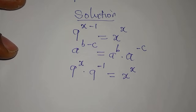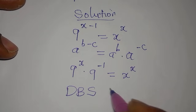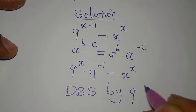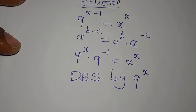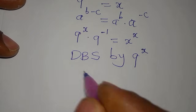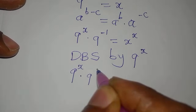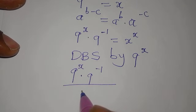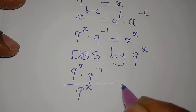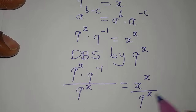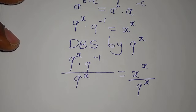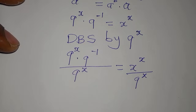The next step is to divide both sides by 9 to the power of x. Doing this will move everything involving x to the right-hand side. So we have 9 to the power of x times 9 to the power of negative 1, all over 9 to the power of x, equal to x to the power of x over 9 to the power of x.